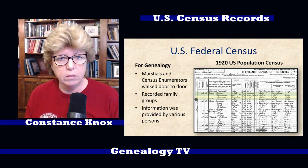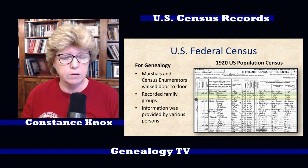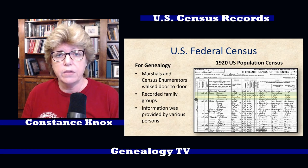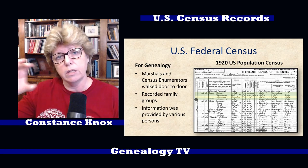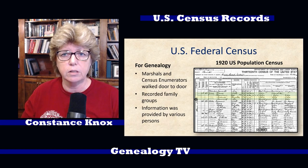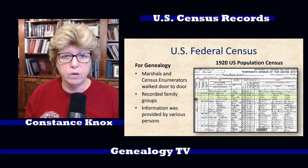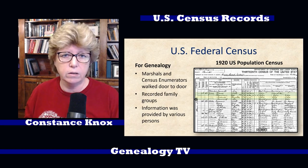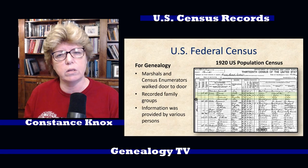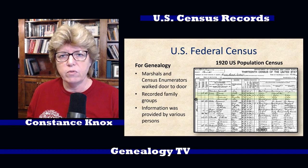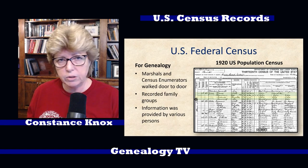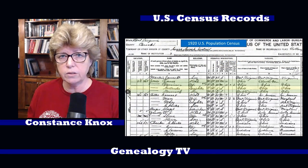The U.S. Marshals, and later they called them census enumerators, would walk door to door and document each family group. In the early census records they only documented the name of the head of the household, and then later they added all names. Information was provided by various people — it wasn't always the person at home, sometimes it was a neighbor — so keep that in mind.